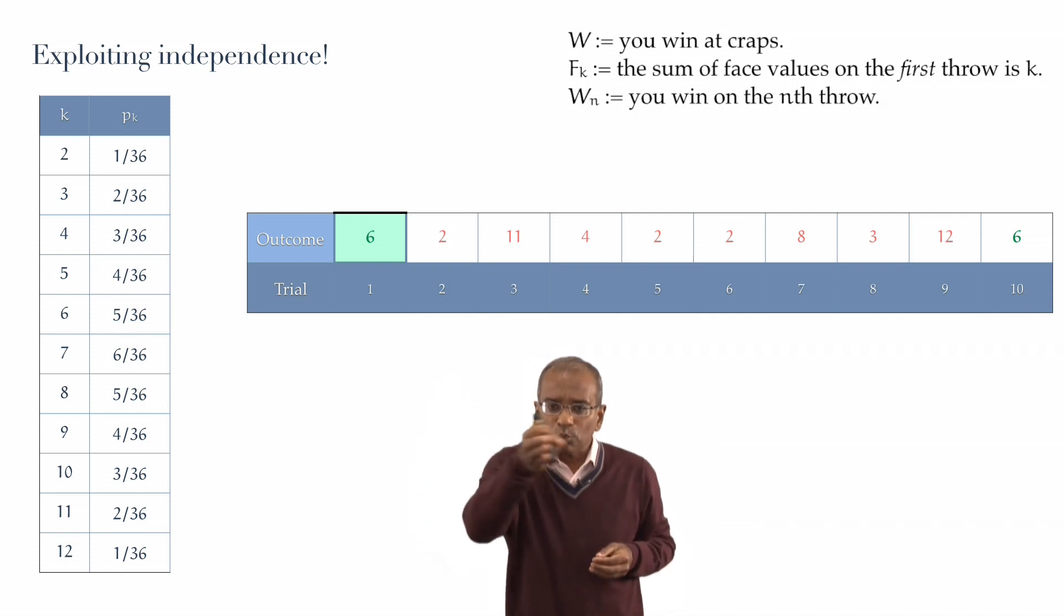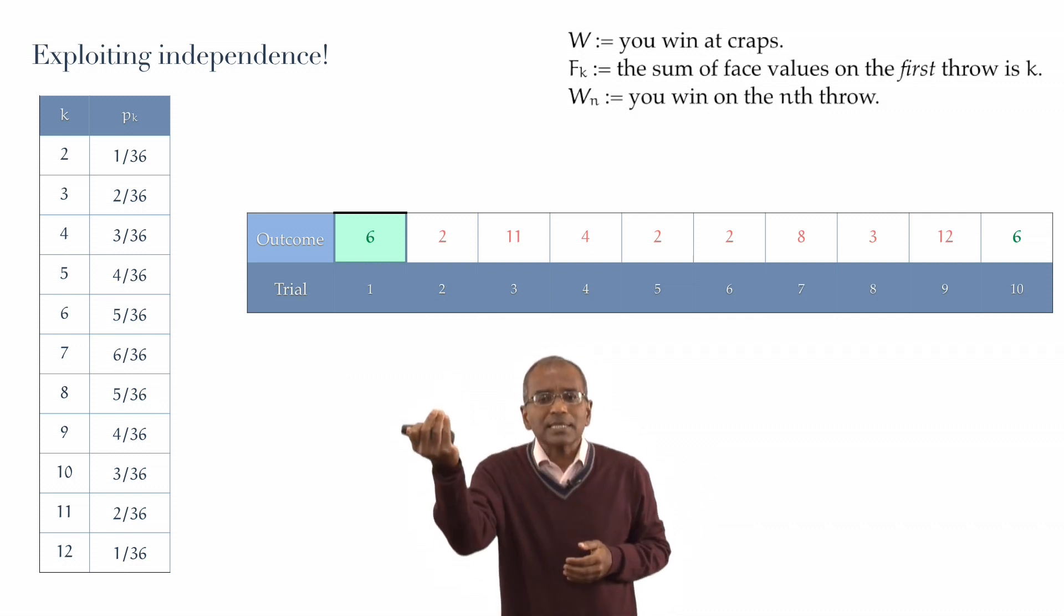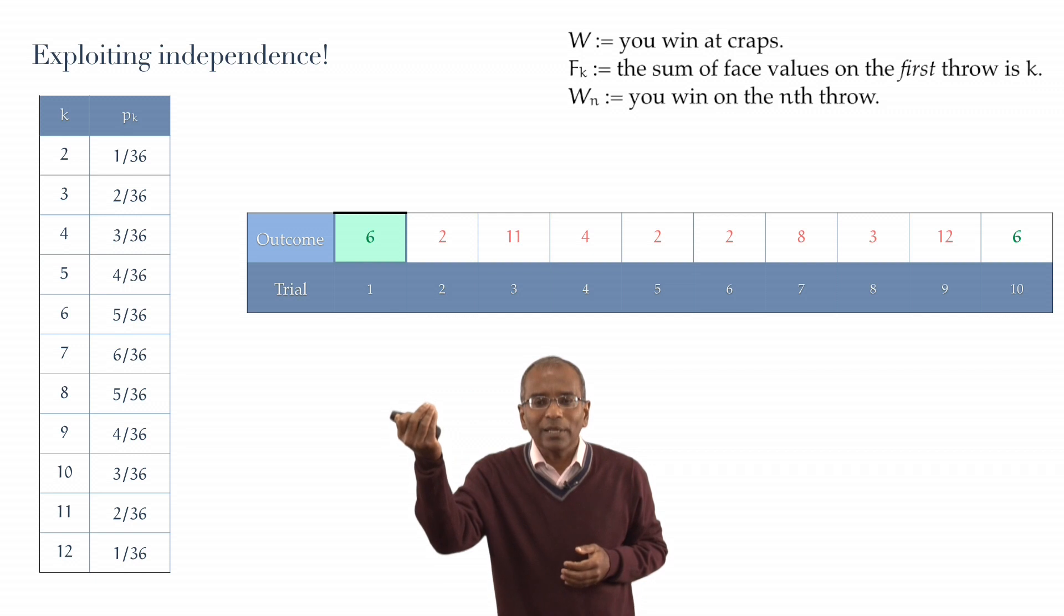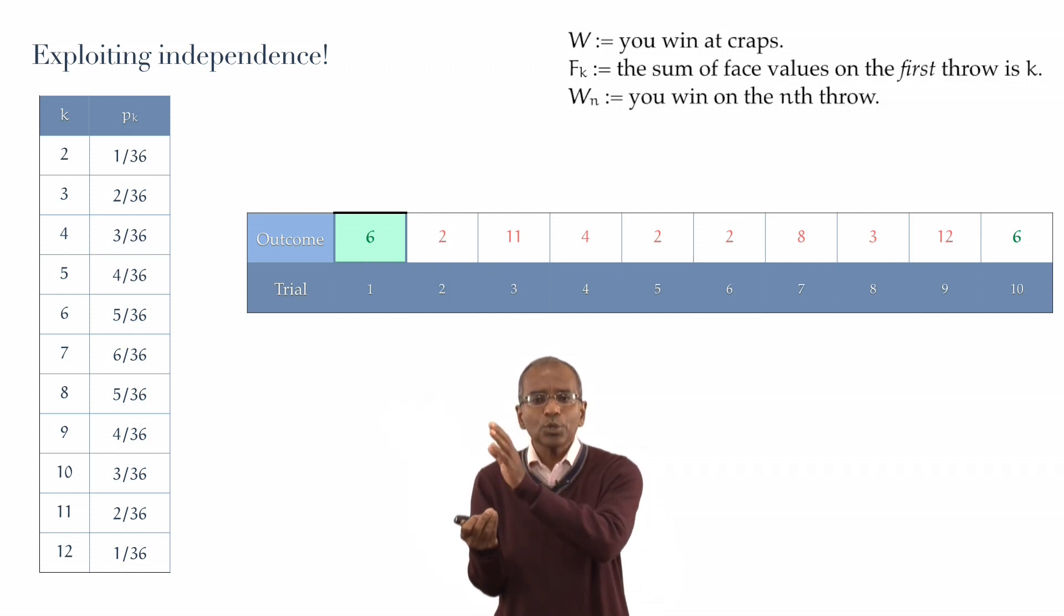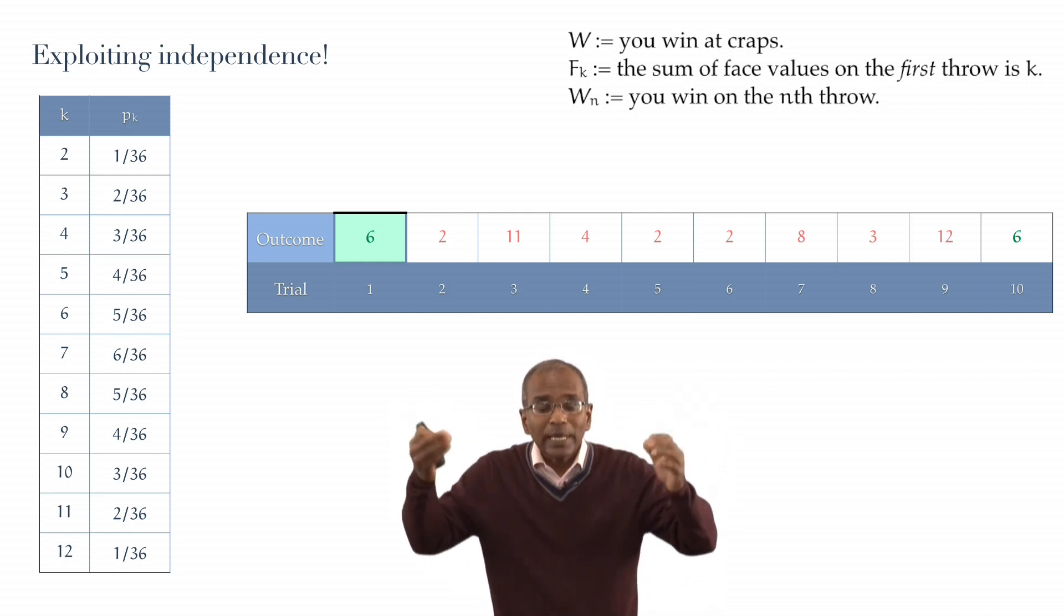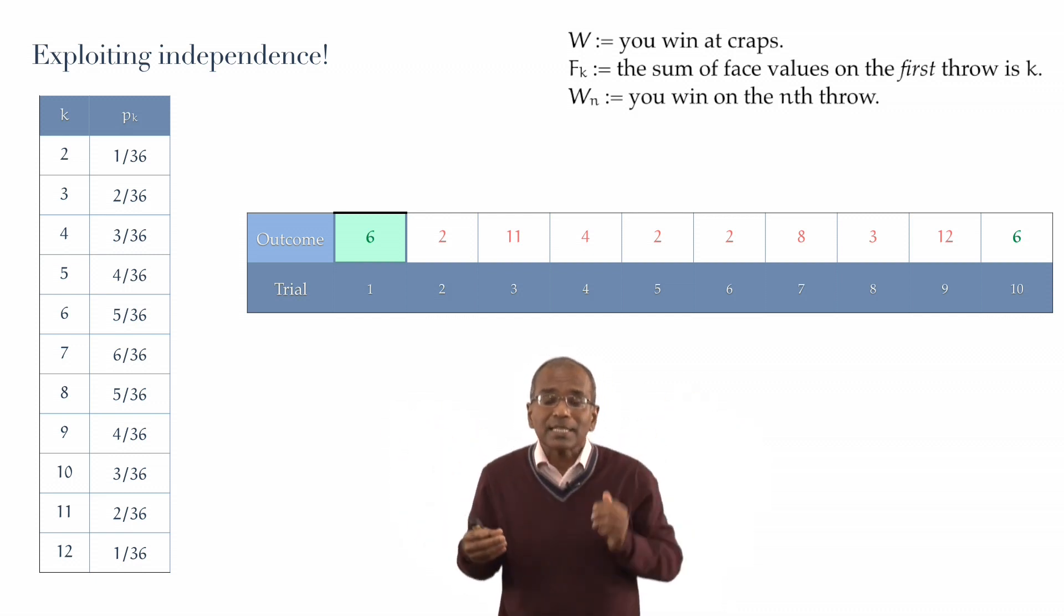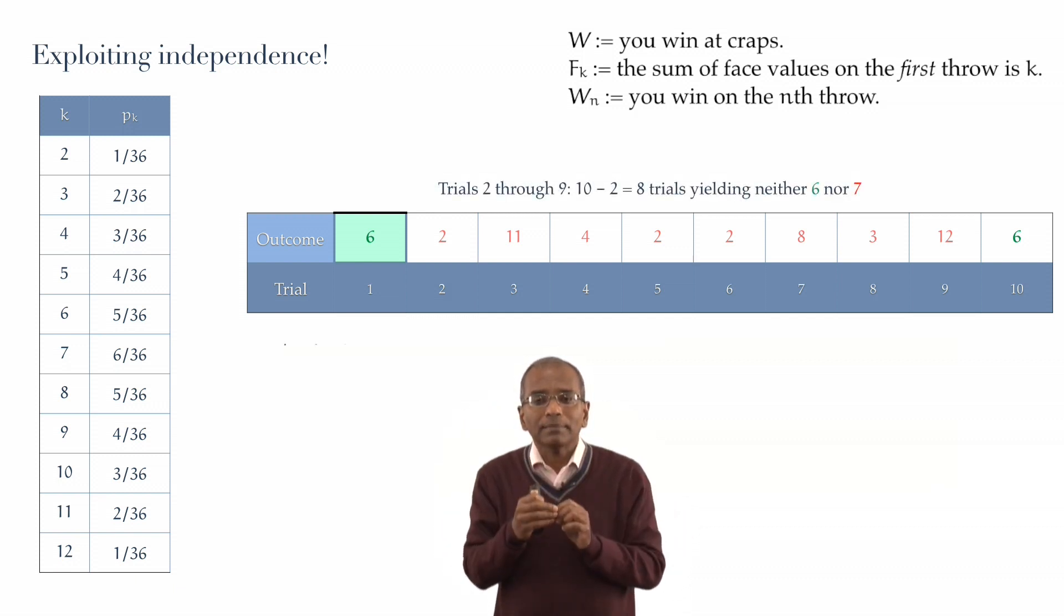Trials are running from left to right, 1 through 10. Six is what we threw on the first trial. And then there are trials 2 through 9, followed by trial 10. And since I'm told that we're winning, trial 10 is a six. What about the trials 2 through 9? There are exactly 10 minus the bookend trials, 10 minus 2 trials in question in the middle, sandwiched between the start and the finish.